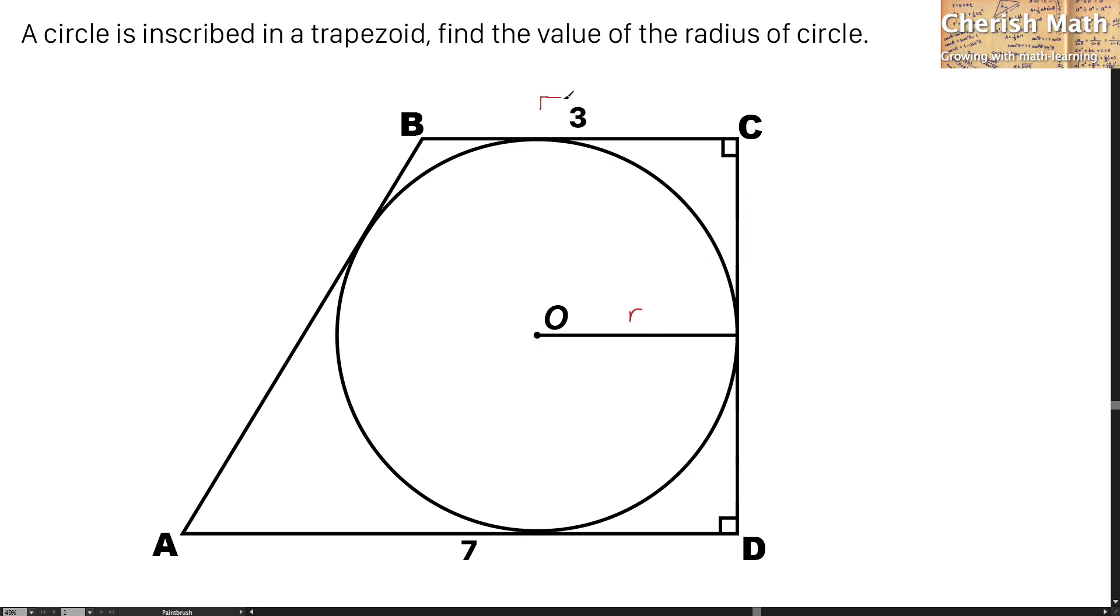So now this part is R, and it happens for the bottom here. It's R, and here turns 7 minus R. And for this part, it is 3 minus R, and now for this part is going to be the same with this, 7 minus R.